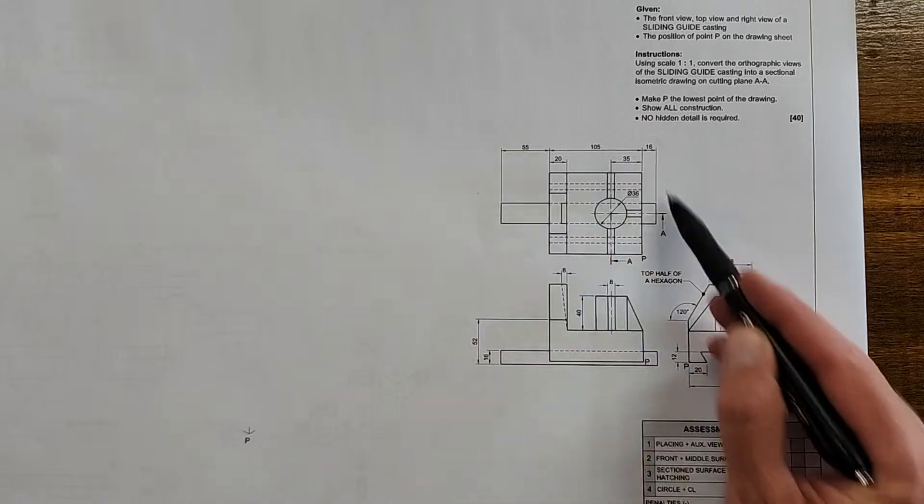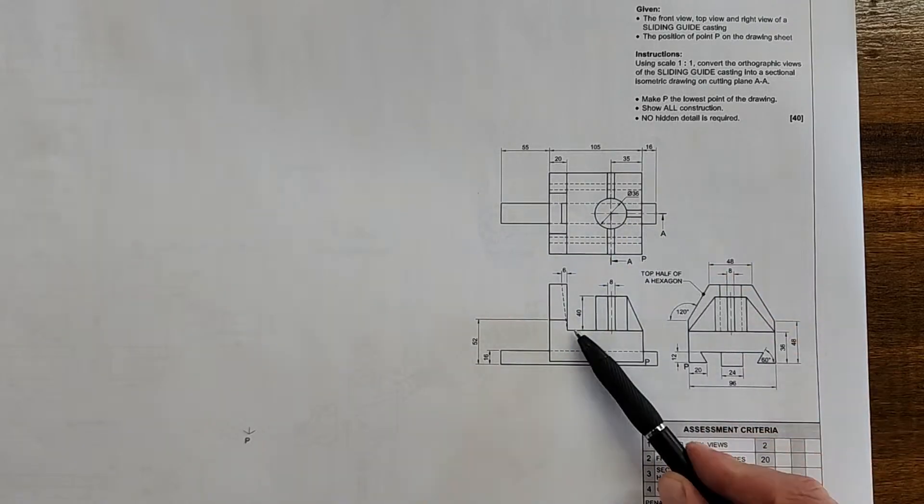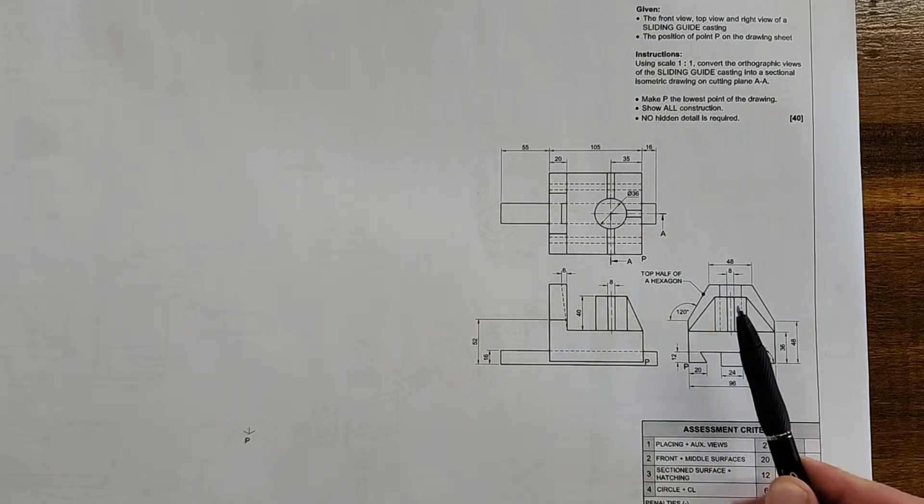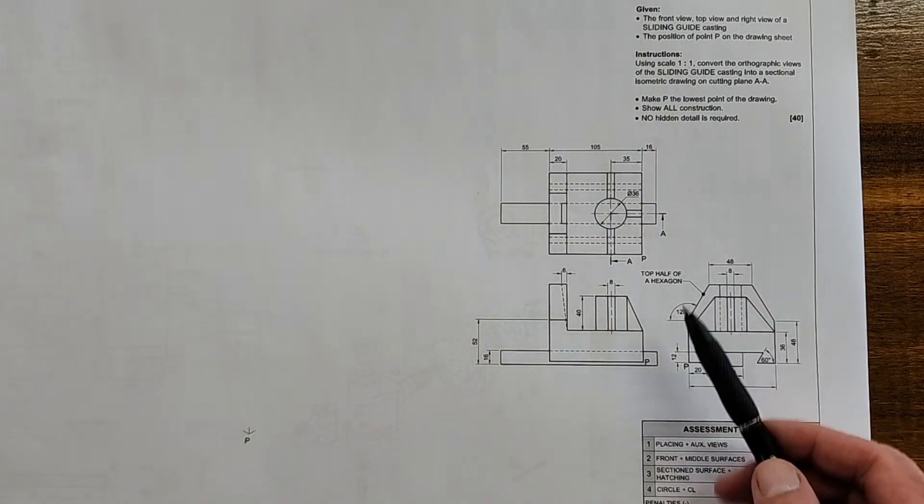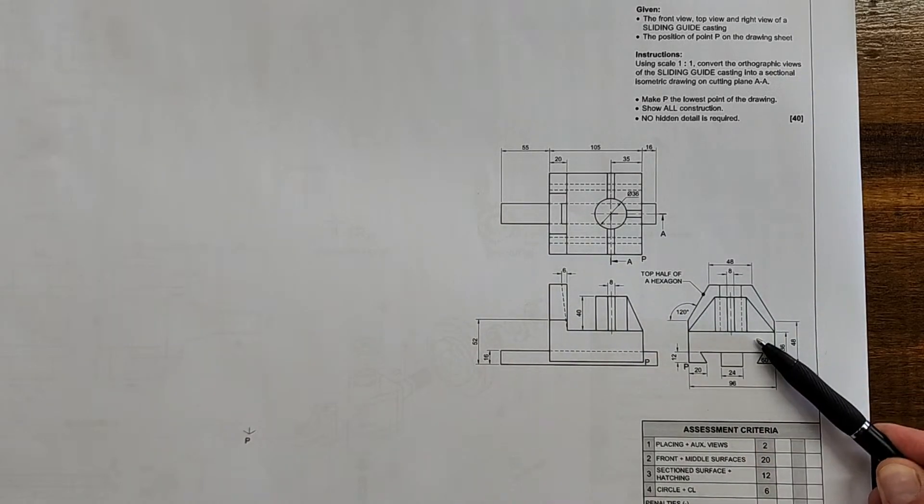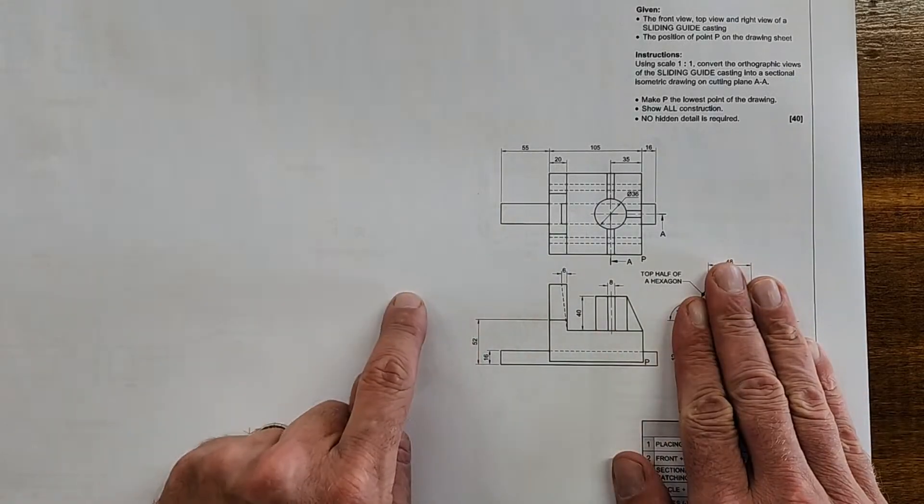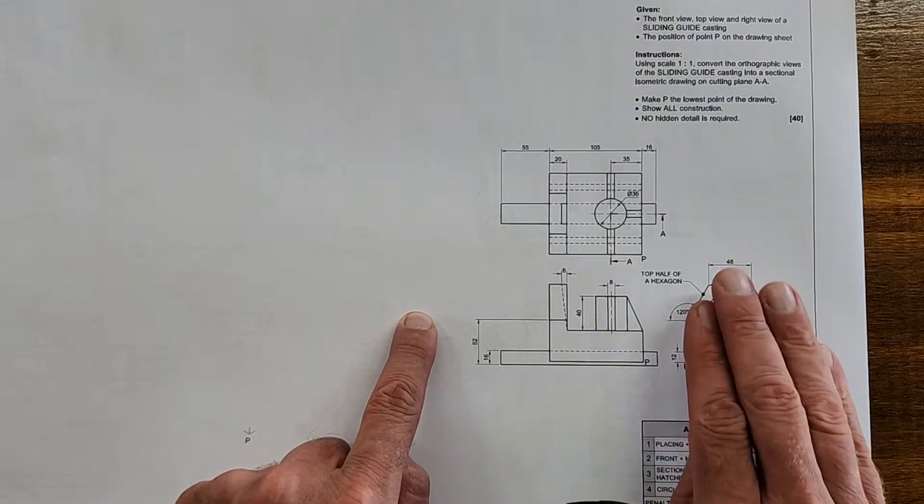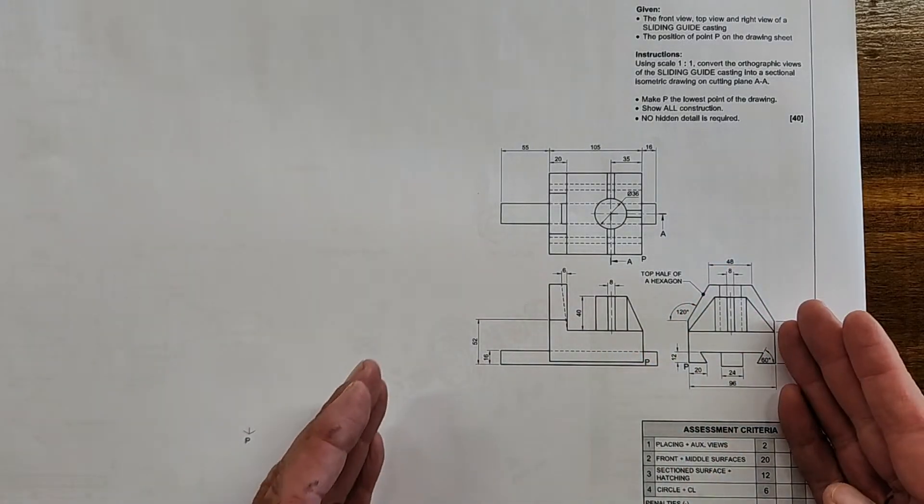My tip here is just remember the top view will always be on its own. The front view will either always have a left view next to it or a right view next to it. So because it's third angle orthographic projection, if the layout is as such top view, front view, then this is the right view. If this view was this side, then it would be top, front, left. Of course there is a video on my channel on how to understand the difference between first angle orthographic projection and third angle.